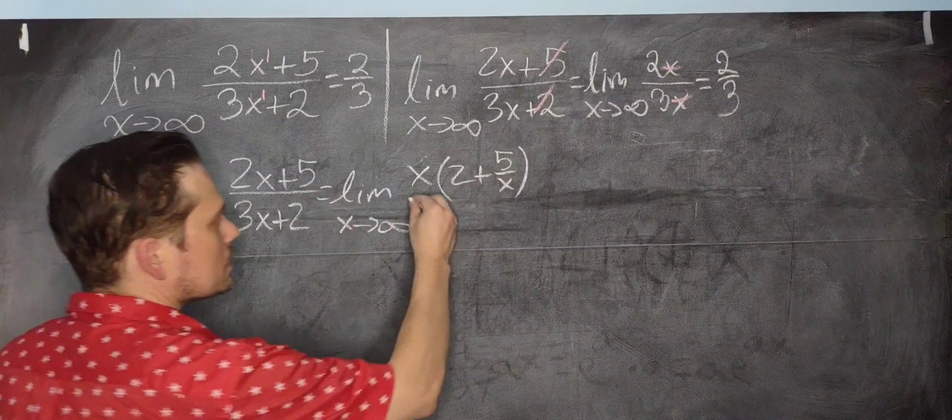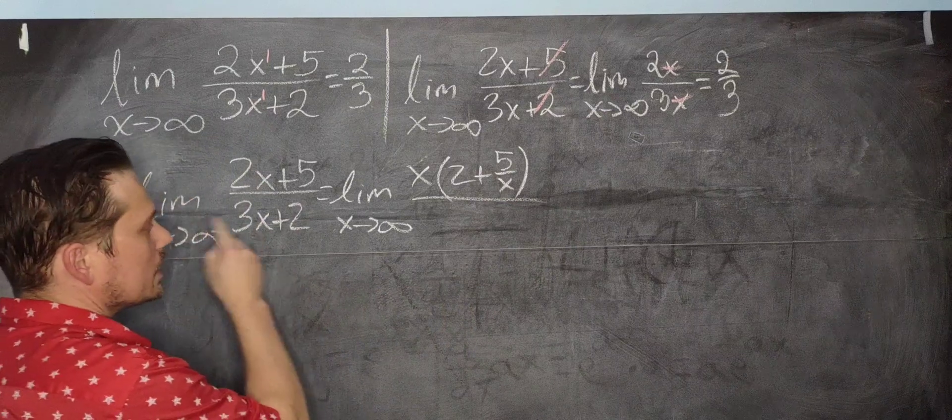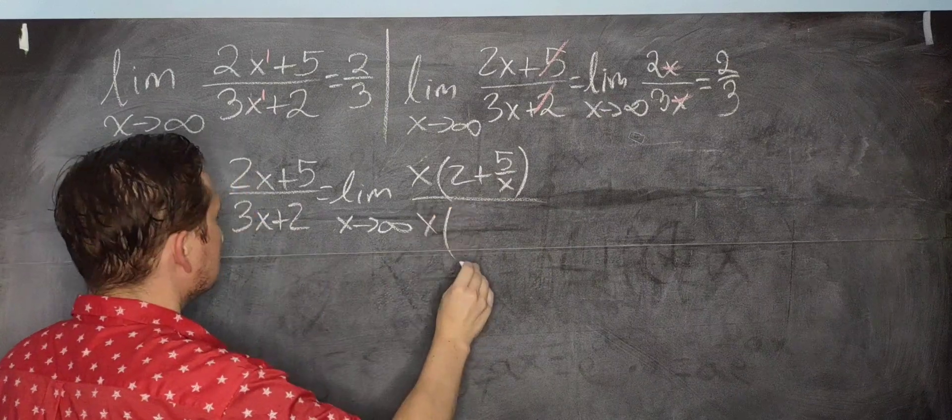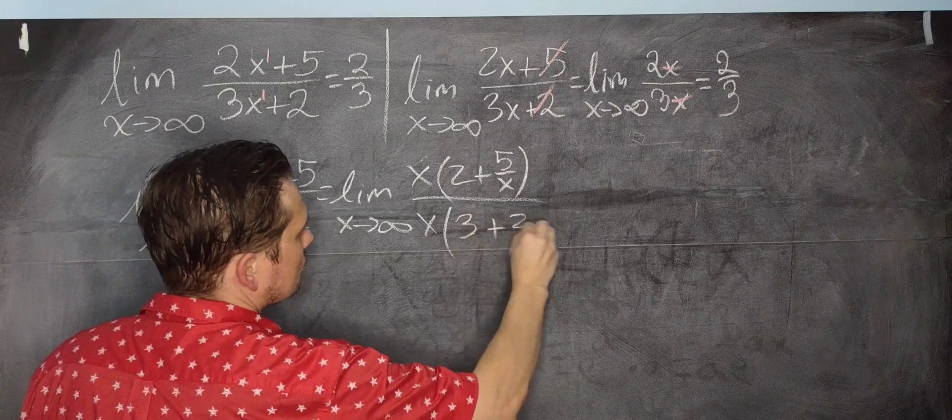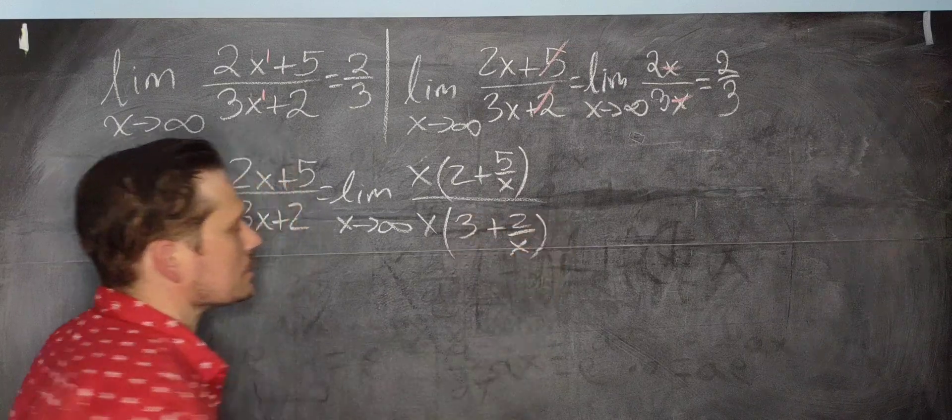All right. And then here in the bottom, same logic, you're going to pull an x out, so you have the x out, and then you have left over here, 3 plus 2 over x. Again, same reasoning.